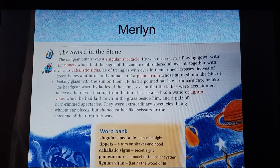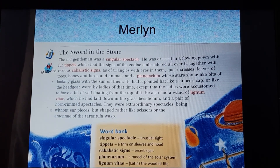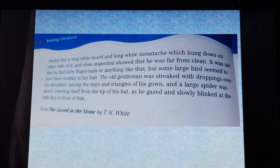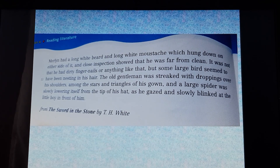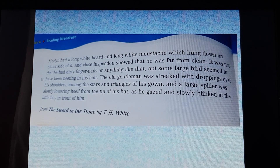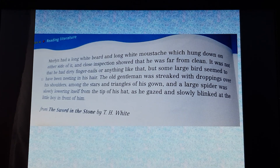He also had a wand of lignum vitae, which he lay down on the grass beside him, and a pair of horn-rimmed spectacles — they were extraordinary spectacles, being without earpieces but shaped rather like scissors or the antennae of a tarantula wasp. Merlin had a long white beard and a long white mustache which hung down on either side of it, and close inspection showed that he was far from clean. It was not that he had dirty fingernails or anything like that, but some large bird seemed to have been nesting in his hair. The old gentleman was streaked with droppings over his shoulders among the stars and triangles of his gown, and a large spider was slowly lowering itself from the tip of his hat as he gazed and slowly blinked at the boy in front of him.